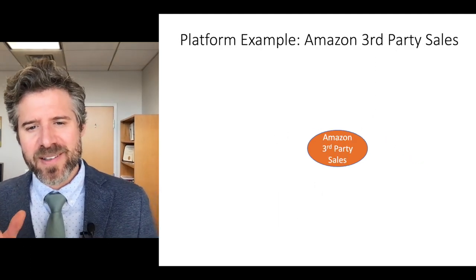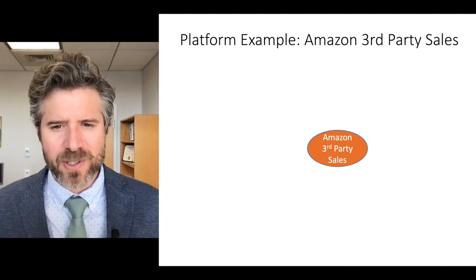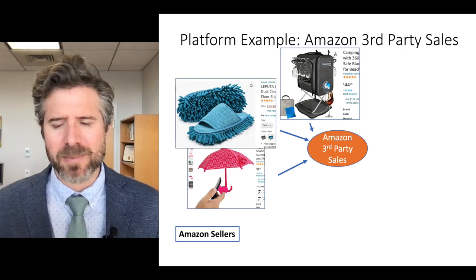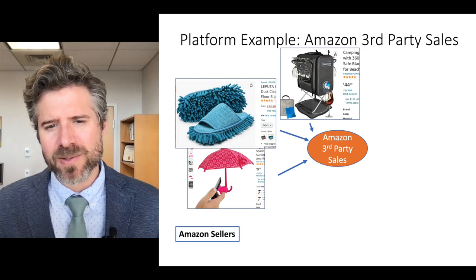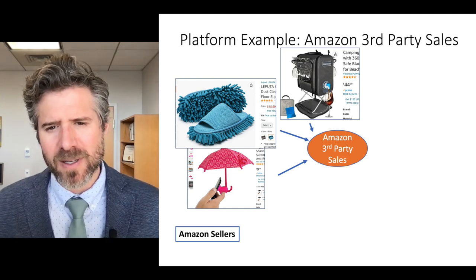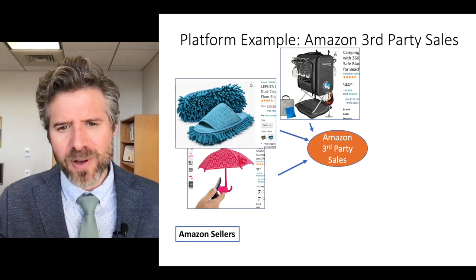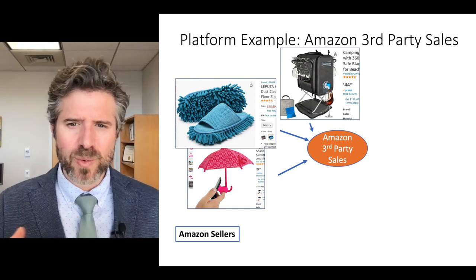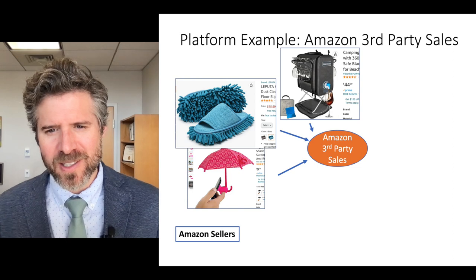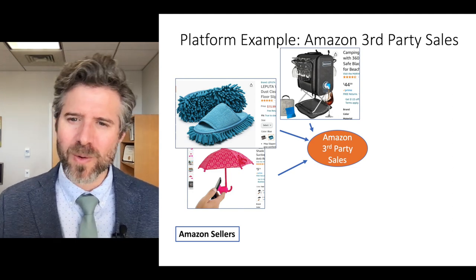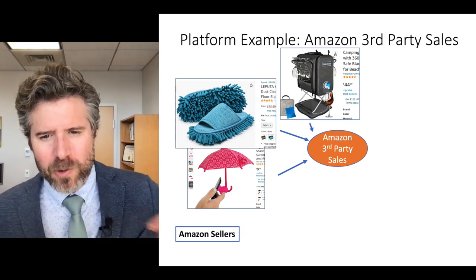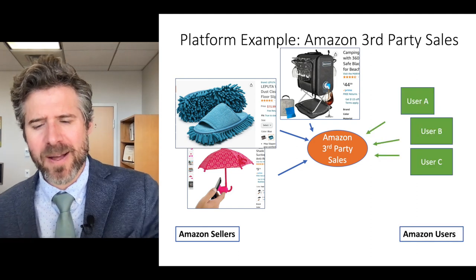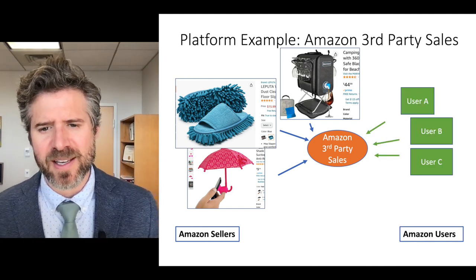The final example is Amazon. We're under no illusions that when we buy on Amazon we're not always buying from Amazon. When you buy your cell phone umbrella, dust slippers, or your actual wine cooler, we understand that Amazon opens up their system to allow companies to sell directly to consumers. In exchange, Amazon takes a 15% commission.